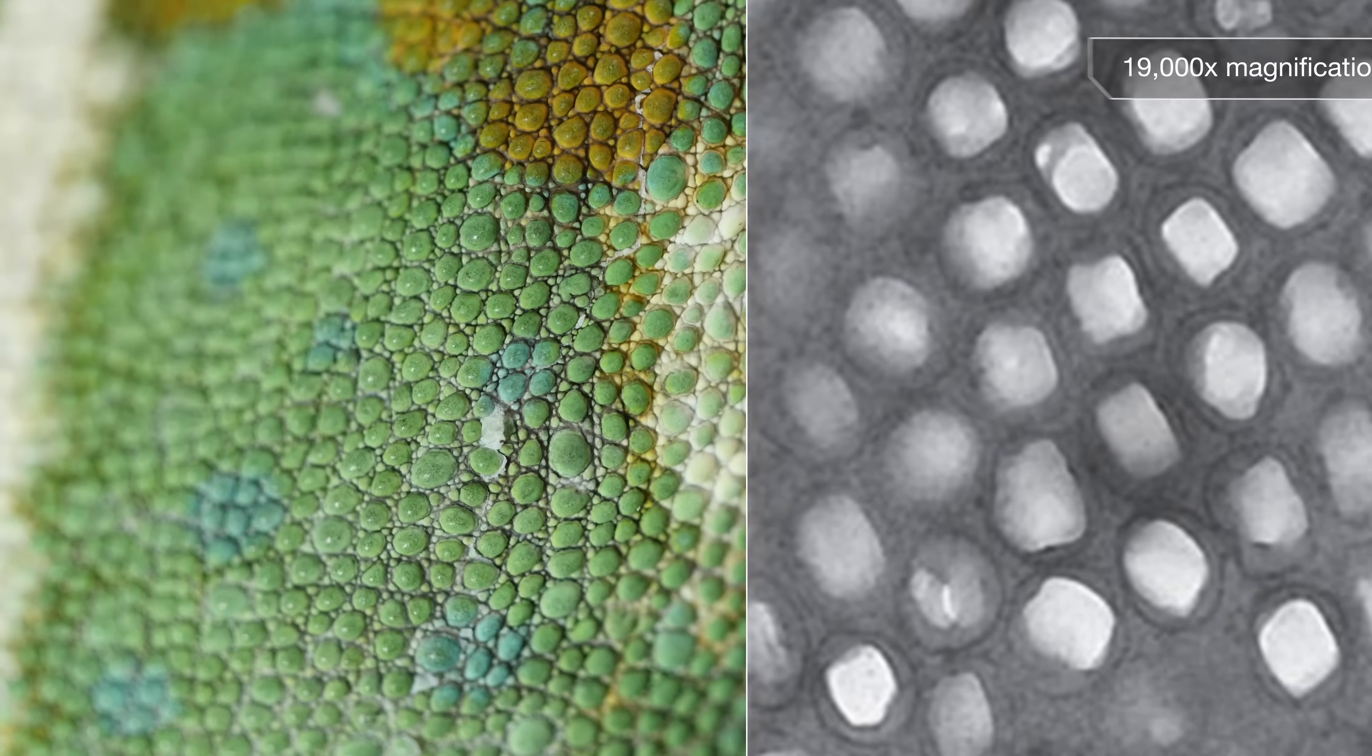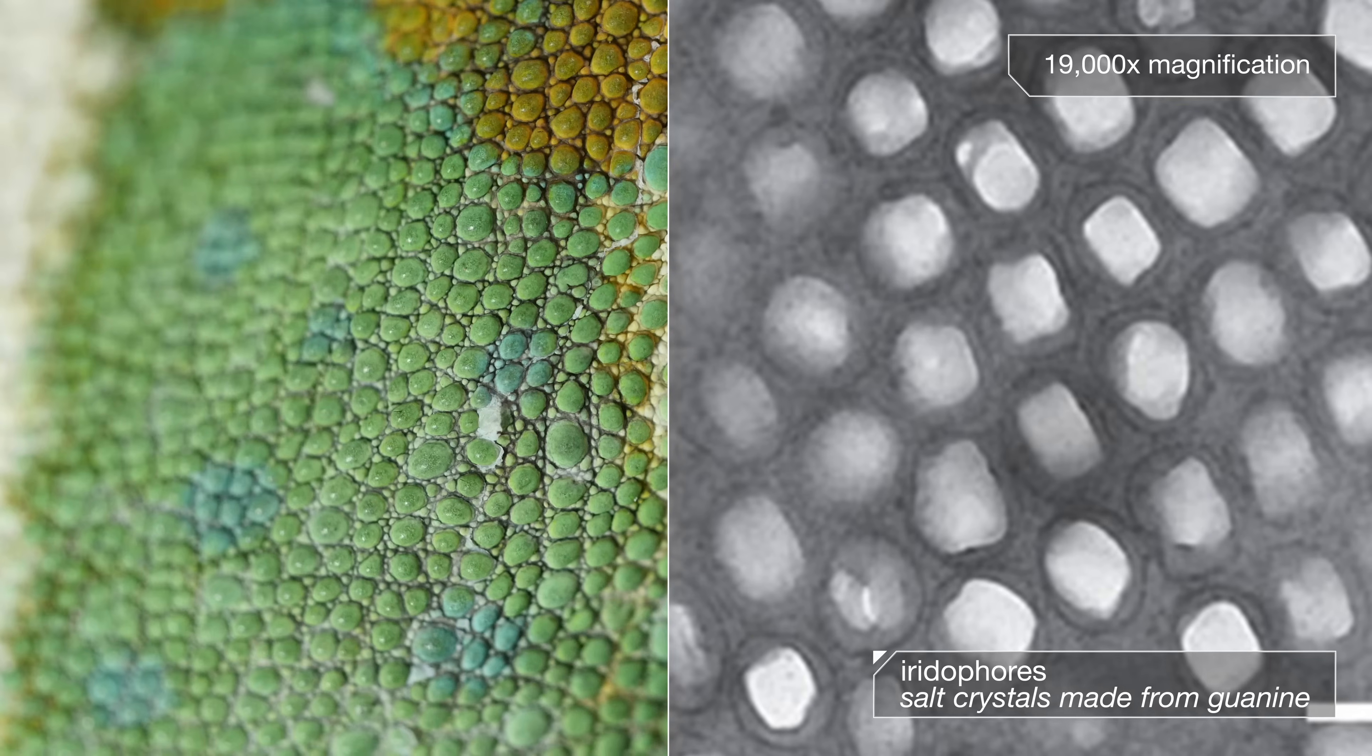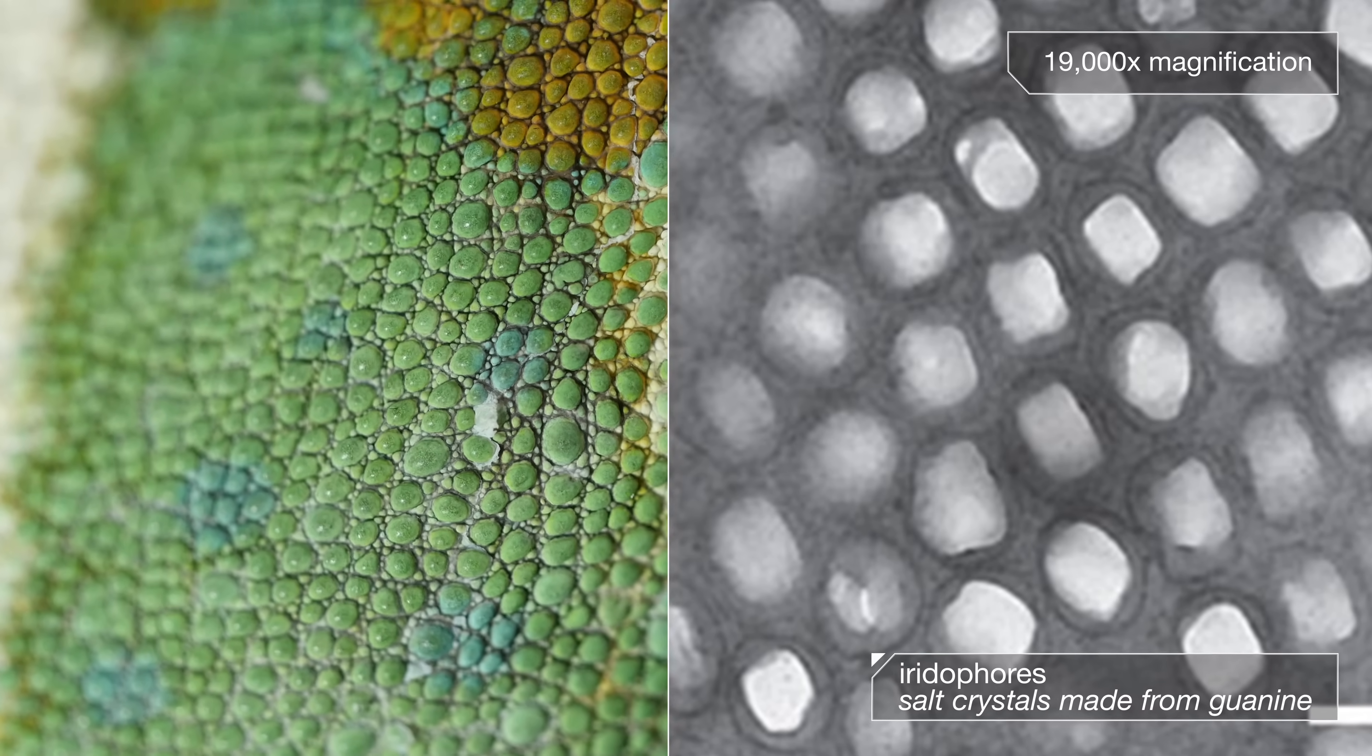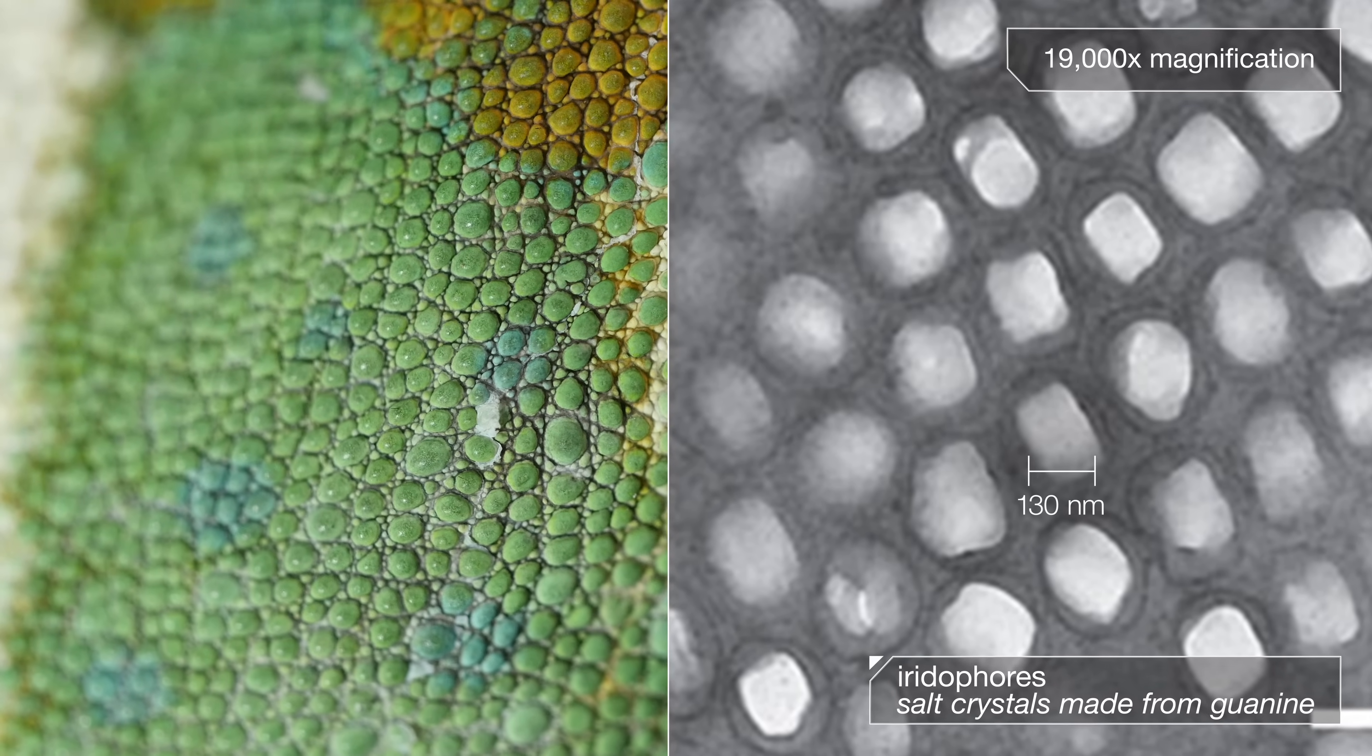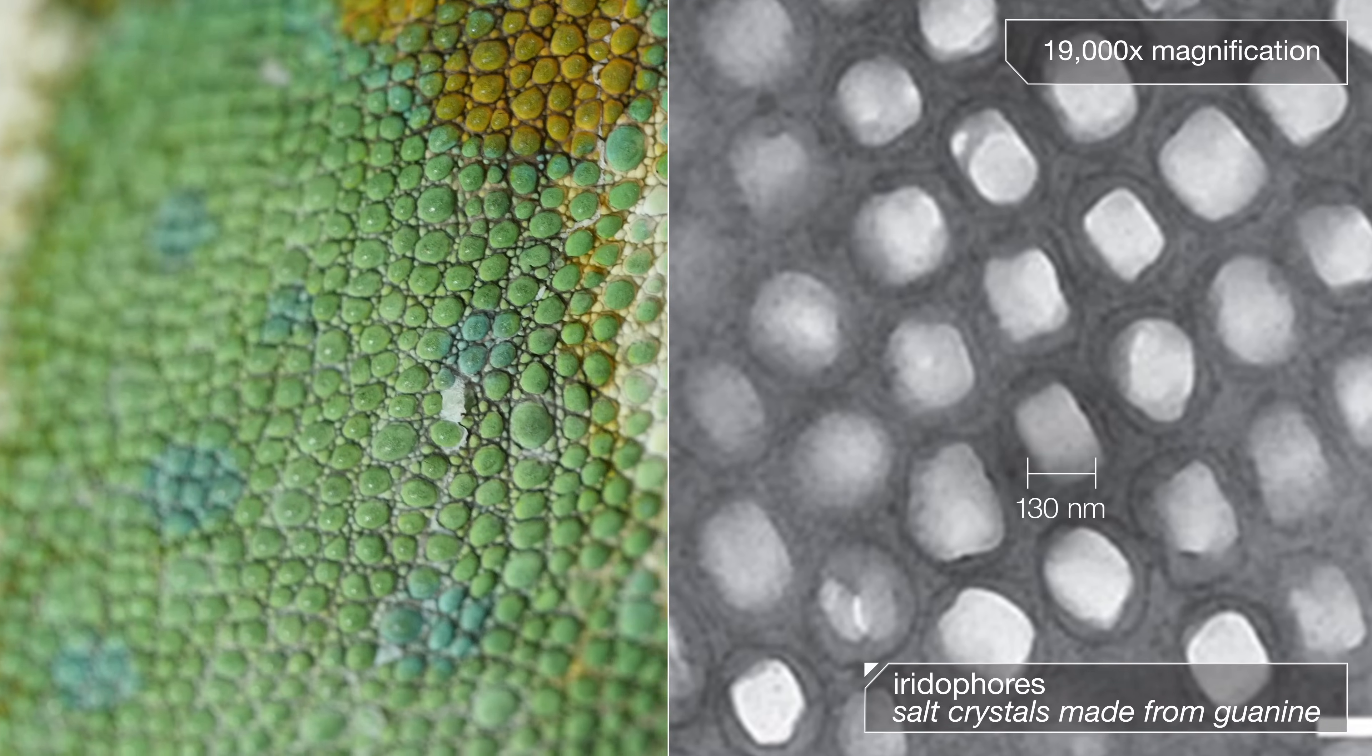Just below the surface of their skin is a layer of cells called iridophores. These cells contain tiny nanoscale salt crystals. They're only 130 nanometers across. That's less than one hundredth the width of a human hair.